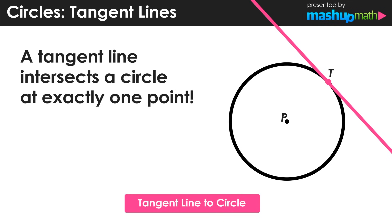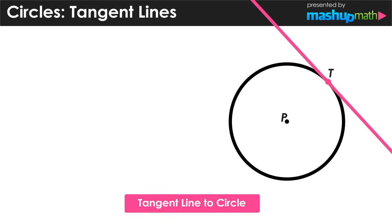Now, if we construct a line that connects that center point P with that point T on the outside of the circle, we would be constructing a radius, and we can call that line R. So PT is a radius of circle P. And if we look at the angle created by the radius and the tangent line, we should see that this appears to be a right angle measuring 90 degrees. And this is the case with tangent lines and circles.